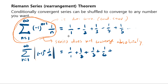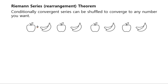Notice that here we have some terms that are positive and some terms that are negative, and you're allowed to rearrange them to make it converge to a different number. Think of the positive numbers as apples and negative numbers as bananas. So you have an infinite sequence of apples and bananas, and adding them is like eating them.